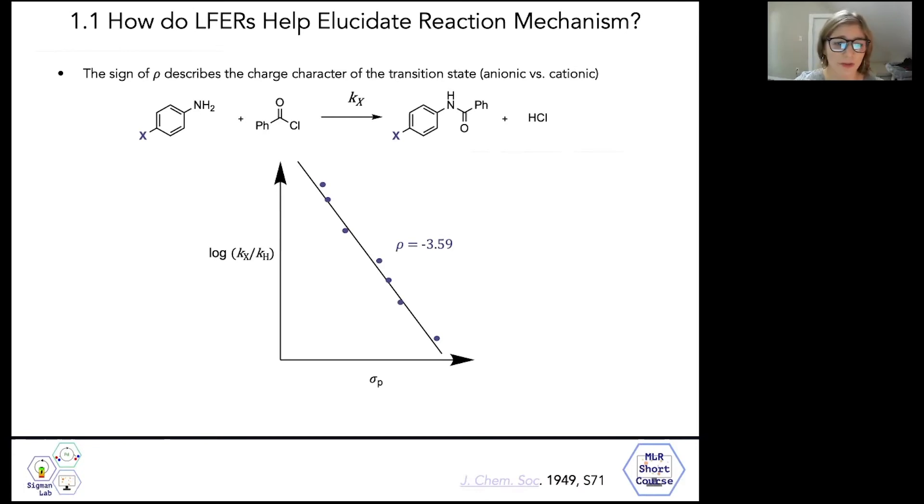If electron withdrawing groups, in fact, slow a reaction as they do in this case, rho will be negative. The negative rho value is interpreted mechanistically as an increase in positive charge character over the course of a reaction. Here, it's understood that cationic character develops on the nucleophilic nitrogen as the substituted aniline attacks benzoyl chloride.